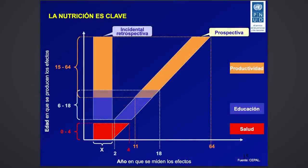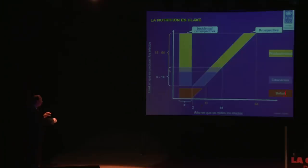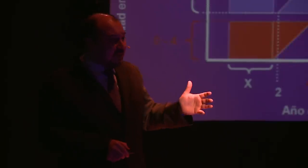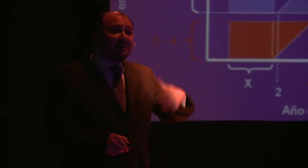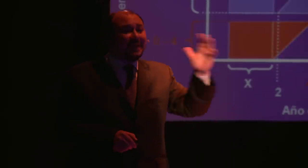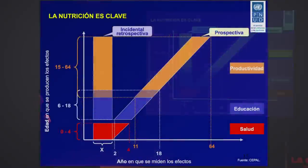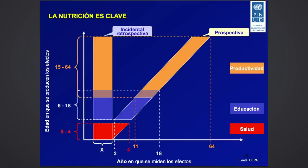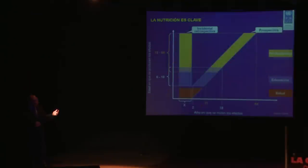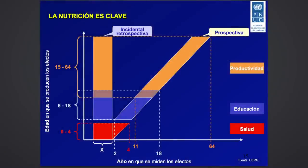¿Qué tiene que ver la nutrición con todo esto? Es clave. Cuando hay niños desnutridos, el impacto inicial y más fuerte de 0 a 4 años se da en la salud. Los niños que están desnutridos tienen una tasa de mortalidad bastante alta y una tasa de morbilidad también alta: mueren más y se enferman más. Si superan esa etapa de 0 a 4 años, cuando van a la escuela, hay alta tasa de repetición, los rendimientos son más bajos, hay un impacto en la educación. Y cuando pasan a la actividad productiva, son menos productivos.